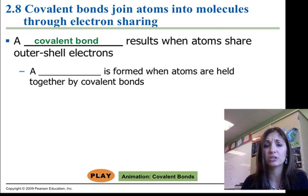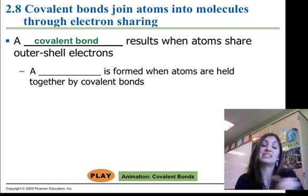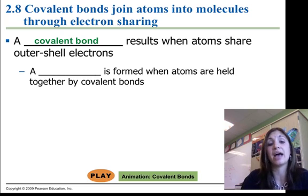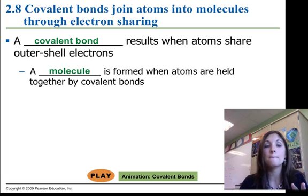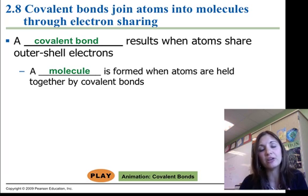Now, covalent bonds are a little bit different. Covalent bonds happen when we share electrons. So that means that no one is really strong enough to tear the other electrons away from another atom. So covalent bonds form what we call molecules. Molecules are held together by covalent bonds, and covalent bonds are the strongest type of bond that we do talk about in here.